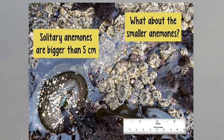You can see these smaller anemones in dense aggregations, and their sizes are 5 centimeters in diameter or smaller, meaning that these are the aggregating anemones.